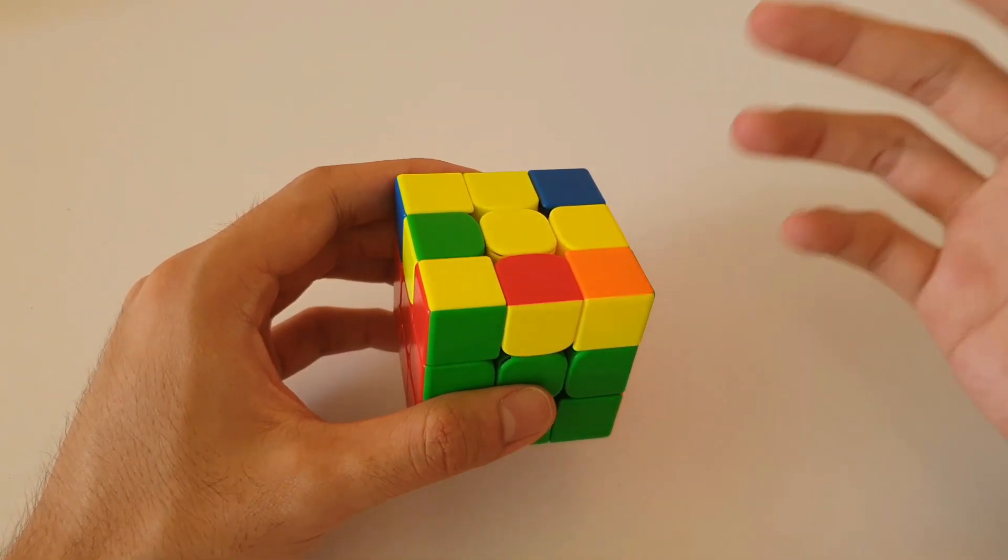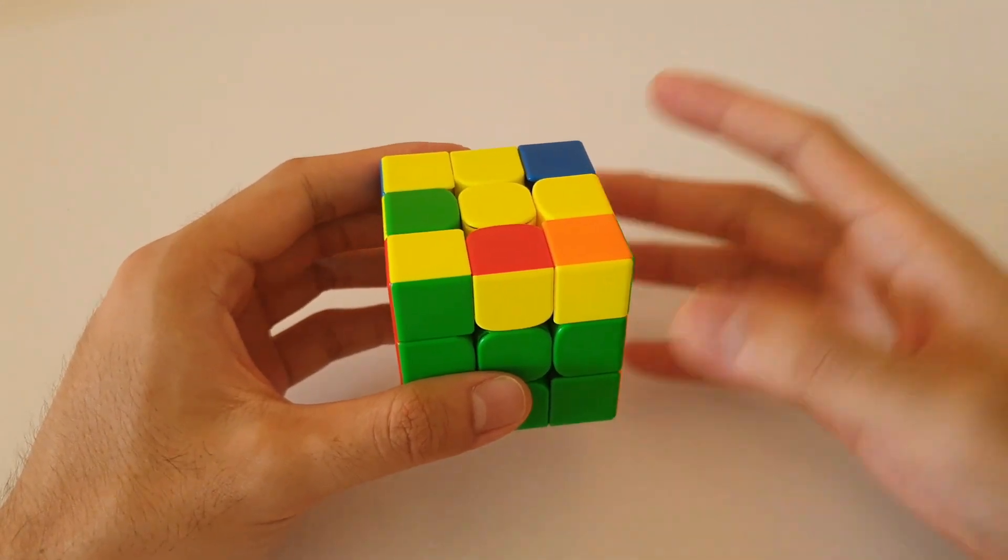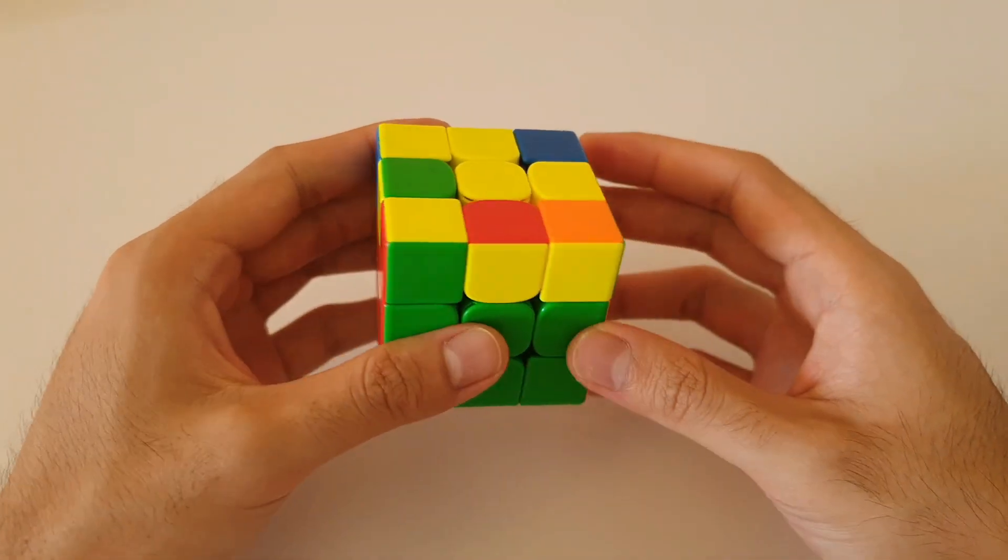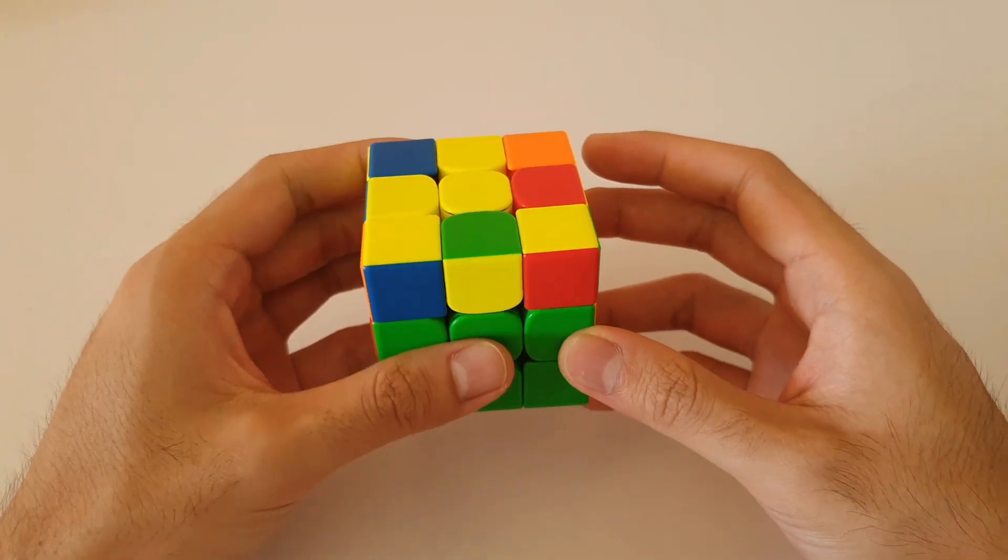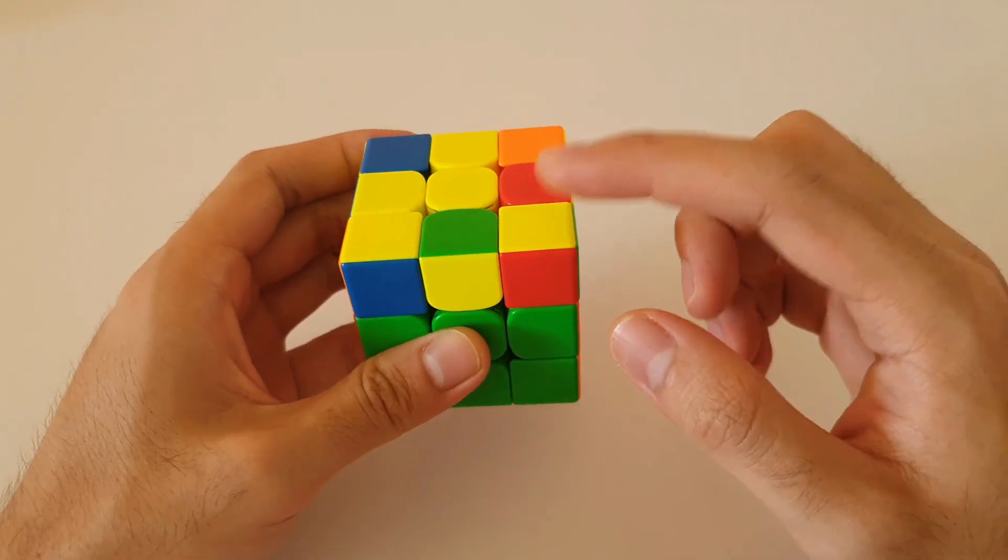However, as always, if you're not a fan of using your left hand for these OLL algorithms, I'll show you a pretty good alternative for this particular case. So for the right-handed alternative, you actually want to hold this case so that the single corner color is on the front right, like this.